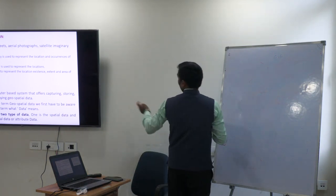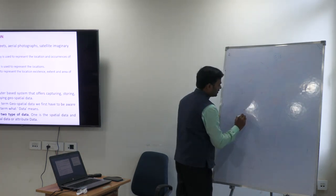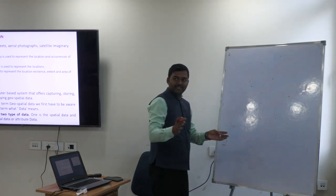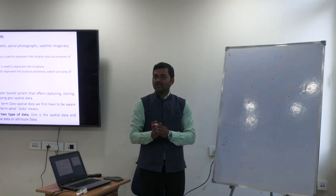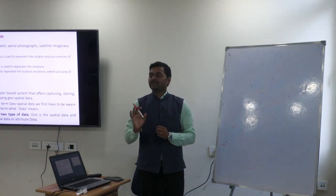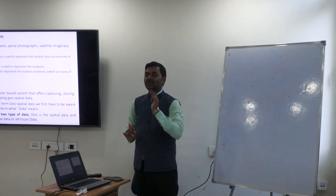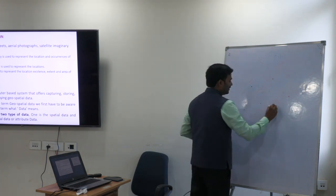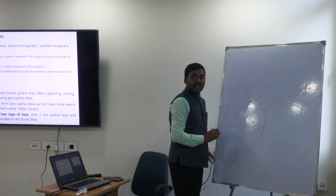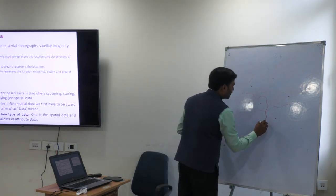In the map, a point may represent an ATM center, an open well, tube well, or electric post — different features having a single coordinate. A point has a single coordinate: one latitude and one longitude. A line may be a road, an irrigation canal, or a river — anything linear. A line has a series of geographic coordinates, X and Y values, continuously along the line.